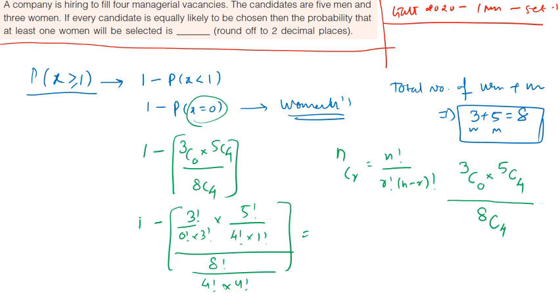If we solve this, then the answer is 0.928, which is almost equal to 0.93. So 0.93 will be our answer. Thank you.